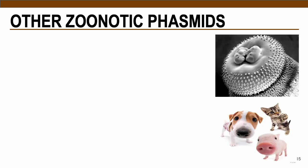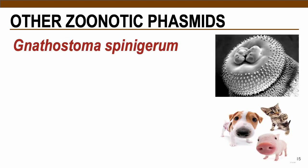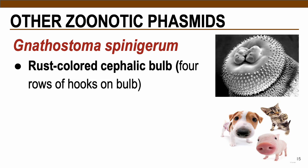The next parasite is Gnathostoma spinigerum. Their adults contain a rust-colored cephalic bulb which contains four rows of hooks. Unfortunately, under the light microscope we cannot view this — usually an electron microscope is needed to visualize these particular rows of hooks.